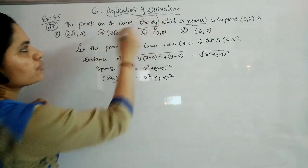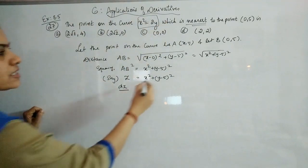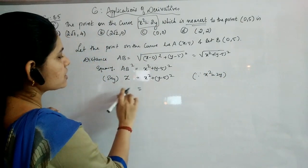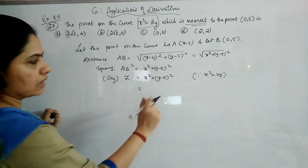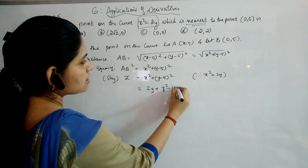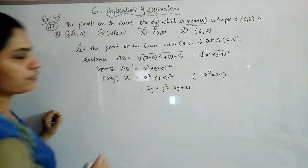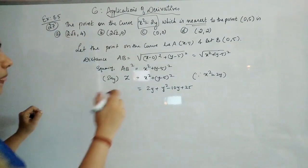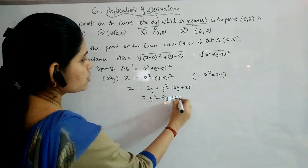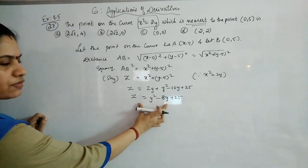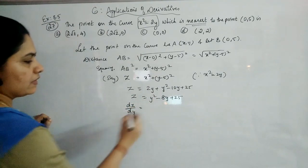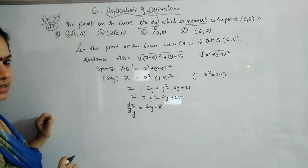The curve is given as x² = 2y, so we replace x² with 2y. This makes z a function of one variable: z = 2y + y² - 10y + 25. Differentiating, dz/dy = 2y - 8.